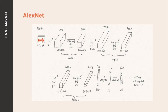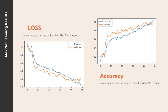Here is our structure for the AlexNet convolutional neural network. In total, we have three convolutional layers, three max-pooling layers, and then three linear layers at the end. In the training process, training accuracy converges to 61.1% and validation accuracy converges to 57.7%.